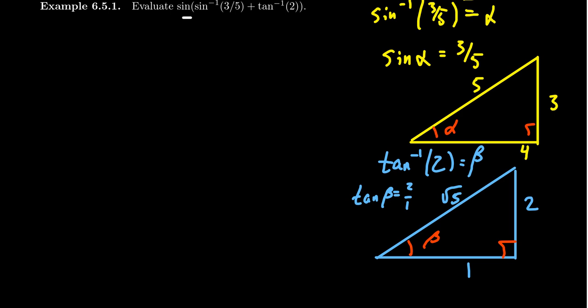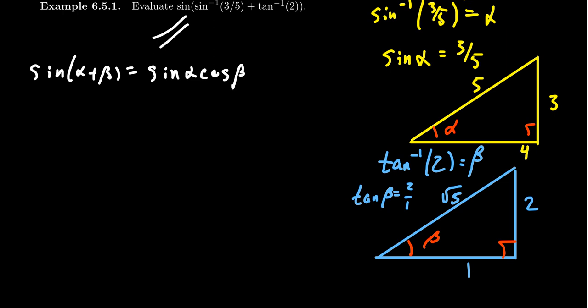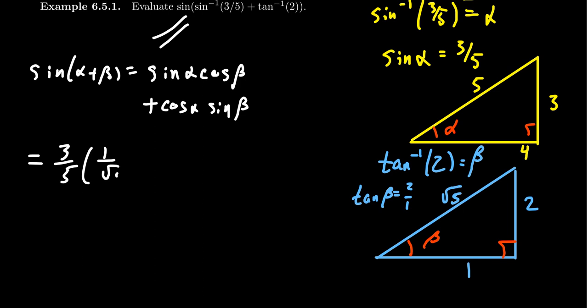So what does that have to do with all of this? Sine of sine inverse of three-fifths plus tangent inverse of two is just sine of alpha plus beta — we just have two angles. Applying the angle sum identity we've seen previously: sine of alpha plus beta equals sine of alpha times cosine of beta, plus cosine of alpha times sine of beta. The angle sum identity for sine is the harmonious one. Now we can compute each of these: sine of alpha is three-fifths. Cosine of beta is adjacent over hypotenuse, which is one over the square root of five.